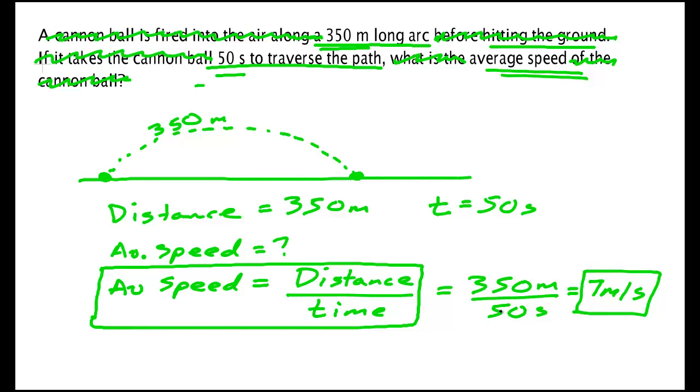Notice that 350 meters over 50 seconds does have the right units. It is in meters per second. Notice also the zeros could be cancelled. 35 over 5 gives me 7. Shouldn't need a calculator to do that. Anyway, this is one of the easier physics problems that you can have in chapter 2, and it's basically about just using definitions.